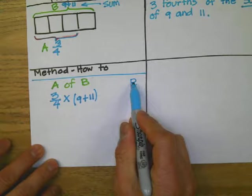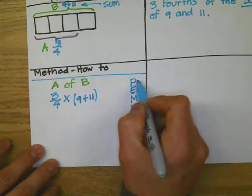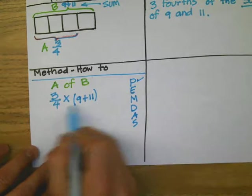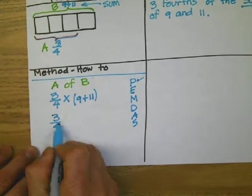So, this becomes three-fourths times... We're going to solve the parentheses. That will be equal to 20.